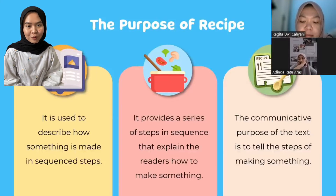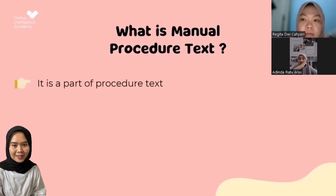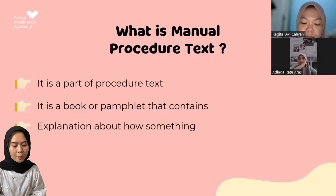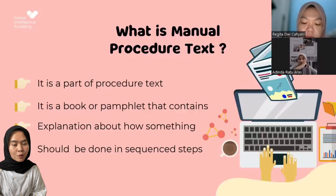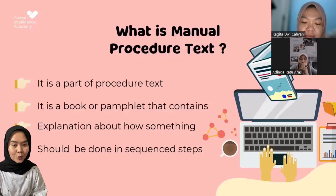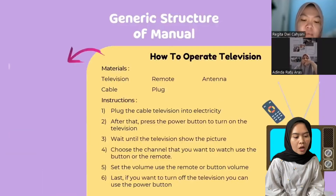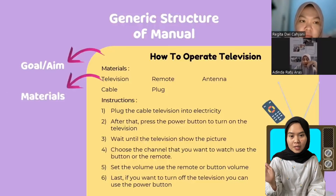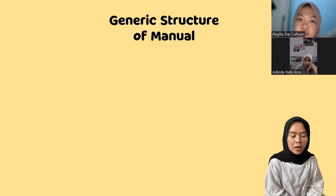Jadi tujuan teks procedure adalah untuk mendeskripsikan langkah-langkah membuat sesuatu secara berurutan. Let's continue to manual procedure text. Manual procedure text is a part of procedure text — it is a book or pamphlet that contains an explanation about how something should be done in sequential steps. The general structure of manual procedure text: goal or aim — for example, 'How to operate a television,' second, materials, and the last one, step or instruction.